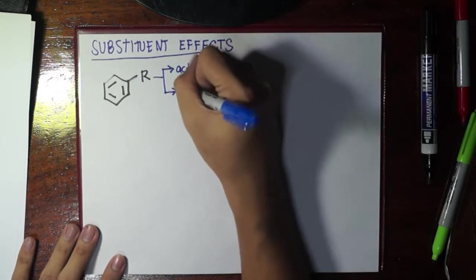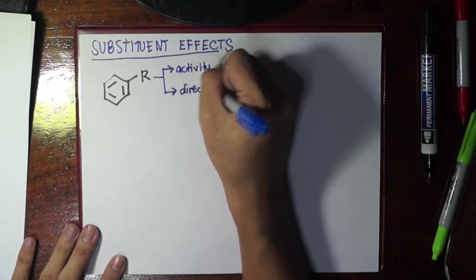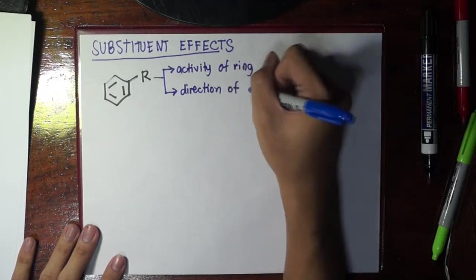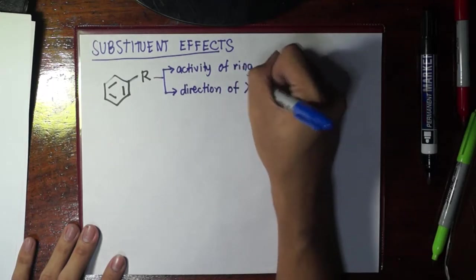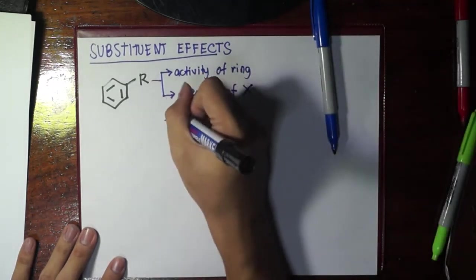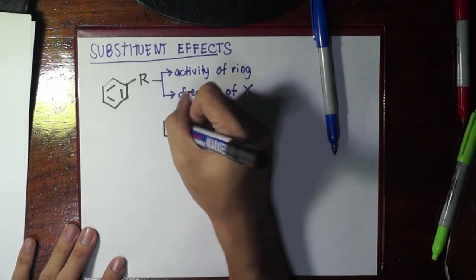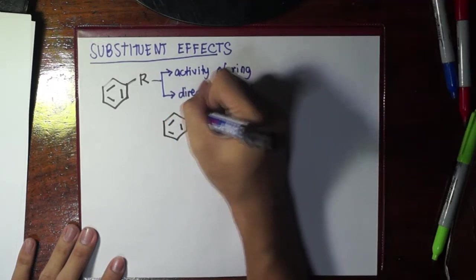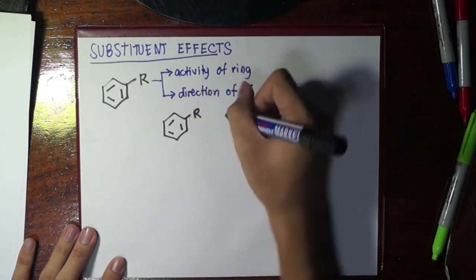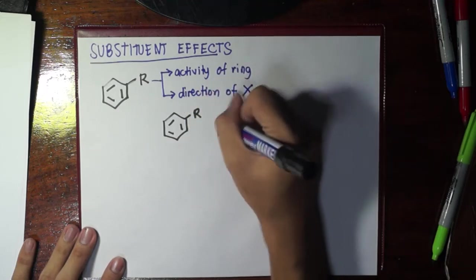And second is the direction of X. If you have a substituent X, then the direction of X, because in an aromatic ring if we have two substituents we have isomers for that.